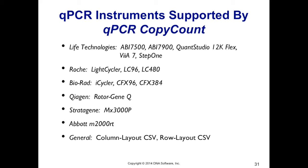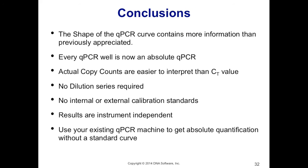In conclusion, the shape of the qPCR curve contains far more information than previously appreciated. The qPCR Copy Count method makes every single qPCR well an absolute quantification. It provides actual counts of DNA rather than CT values, does not require dilution series or internal or external calibration standards, and results are instrument independent. You can use your existing qPCR machine to get absolute quantification without the need for a standard curve.